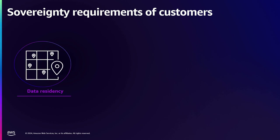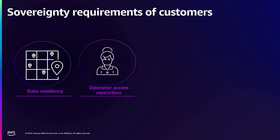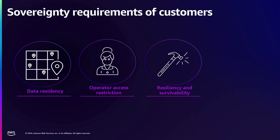The first theme is data residency. This is where customers want to be in control of their data — they want to know who has access to it and where it's stored and transferred to at all times. The second is operator access restriction, which is tied to making sure that neither AWS nor a foreign government or entity has access to their data. The third is the resiliency and survivability pillar — how to sustain operations in the event of a geopolitical situation, a disaster, or a technical failure.